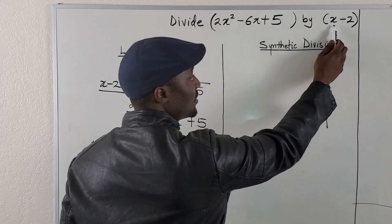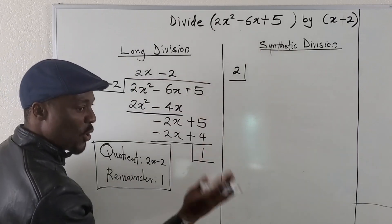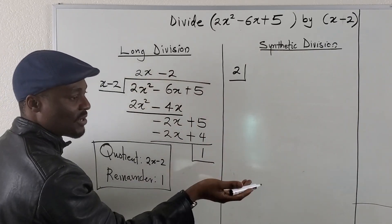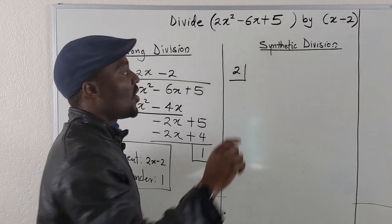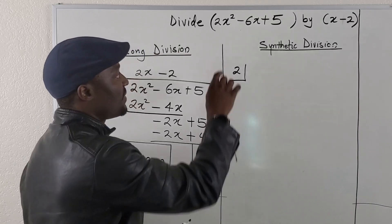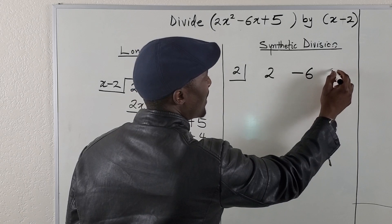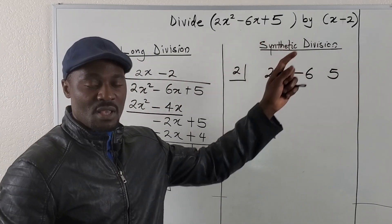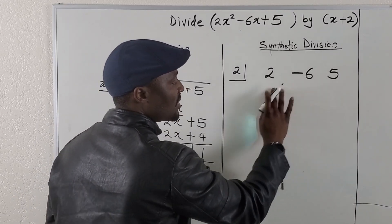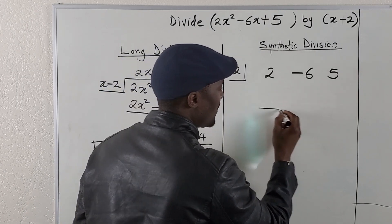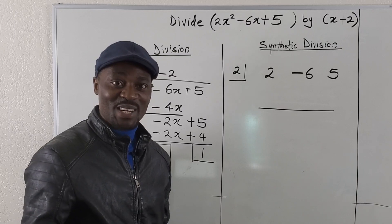Now that we know this is supposed to be 2, just write the 2 here. We don't need to write our answers on top — it's going to be the bottom line. Now what you want to do is copy all the coefficients of the terms in the polynomial you're trying to divide. The coefficients are 2, negative 6, and 5. So you write 2 here, negative 6 and 5. These are the three numbers you need to write because there are three terms. Leave a space for some numbers we might need — this is where your answer will be. You're just going to need three lines.